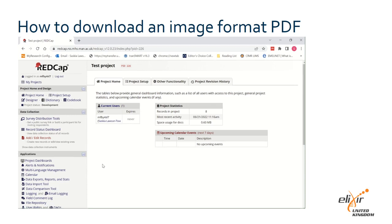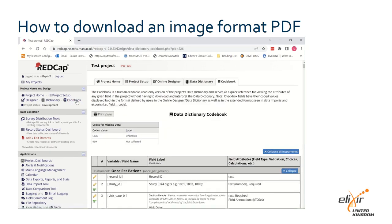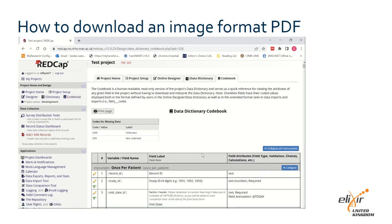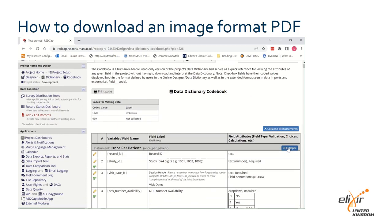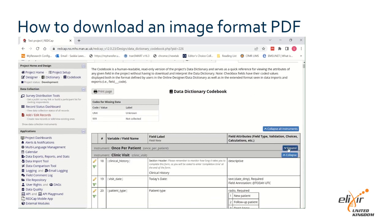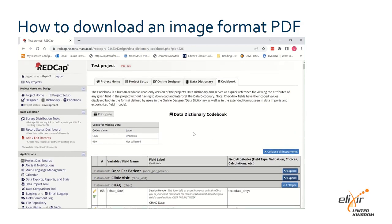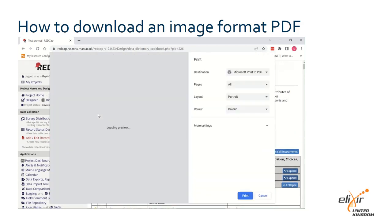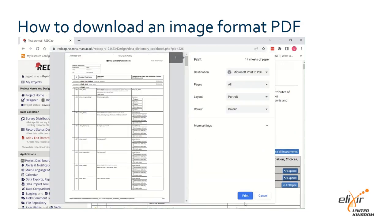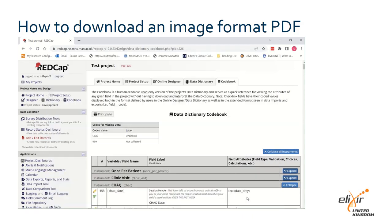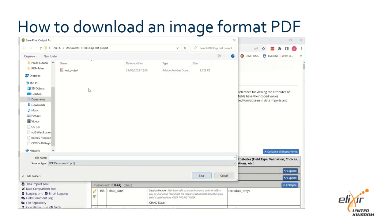To download a PDF in an image format, meaning it cannot be edited, go to your project and click on codebook on the left hand side. Here you can hide instruments using the collapse buttons if you do not want them to appear in your PDF. Click print page and then click print and save your PDF in the desired folder.